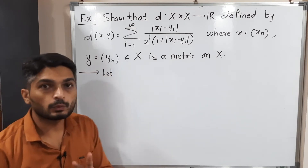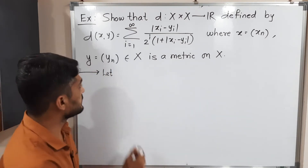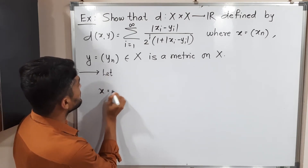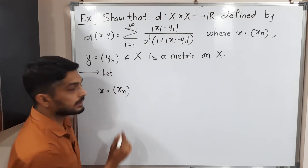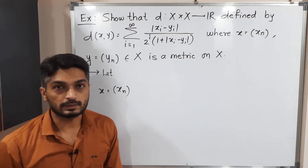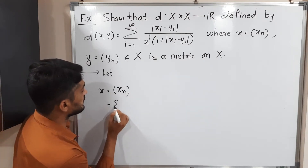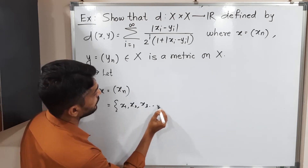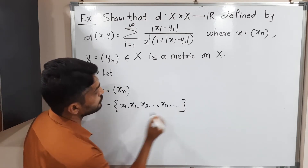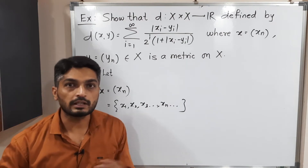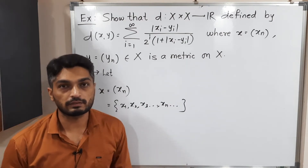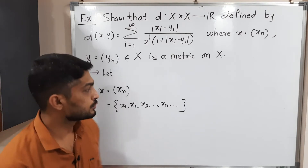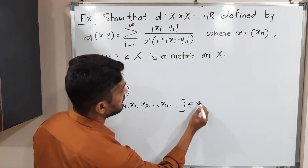I'm considering two elements of capital X. The first element x equals the sequence (xn), so basically xn is a real sequence. That means we have terms x1, x2, x3, and so on — xn and so on. In a sequence we have infinitely many terms, each of which is a real number. This is one element of capital X.